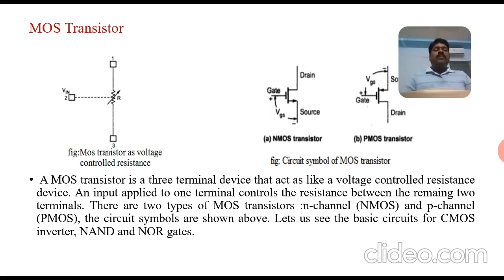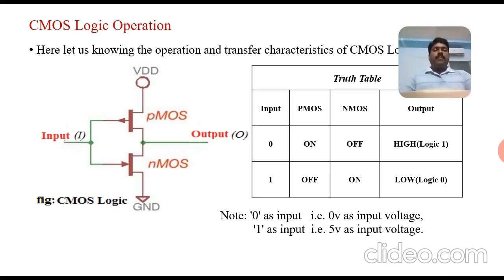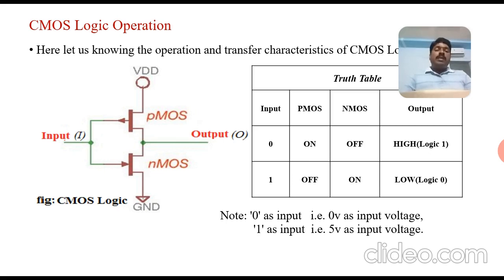Let us see the basic circuits for CMOS inverter, NAND gate, and NOR gate using CMOS logic. For CMOS logic operation, the basic building blocks are the P-channel and N-channel. The common gate terminals of the P-MOS and N-MOS devices are given as the input terminal, and the common drain is taken as the output terminal. The source of the N-channel is connected to ground and the source of the P-channel is connected to VDD.